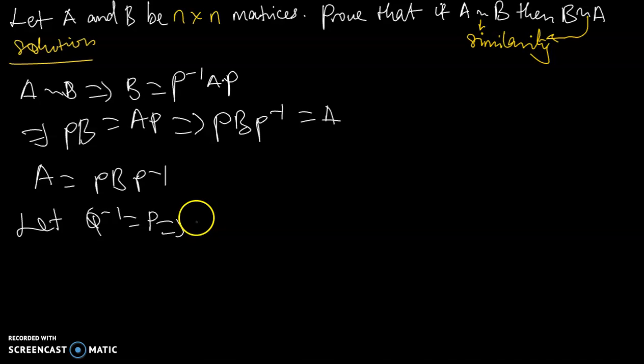Such that A will be equal to Q inverse. And we know Q inverse, in this case, this is Q inverse of B into Q. Q inverse into inverse, and if you inverse by inverse, we simply get A.